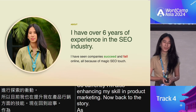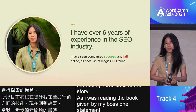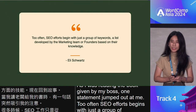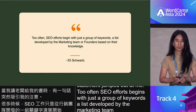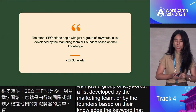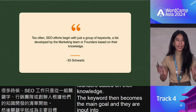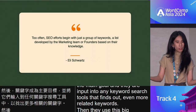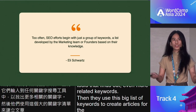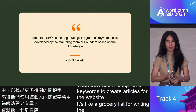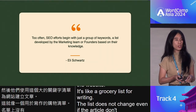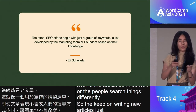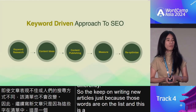As I was reading the book given by my boss, one statement jumped out at me: too often, SEO efforts begin with just a group of keywords — a list developed by the marketing team or by the founders based on their knowledge. The keywords then become the main goal and are input into keyword search tools that find even more related keywords. Then they use this big list of keywords to create articles for their website — it's like a grocery list for writing. The list does not change, even if the articles don't do well or people search things differently. They keep writing new articles just because those words are on the list. This is a quite common practice in the traditional approach.